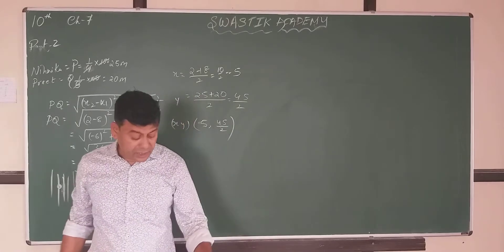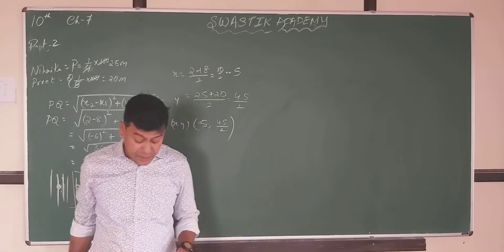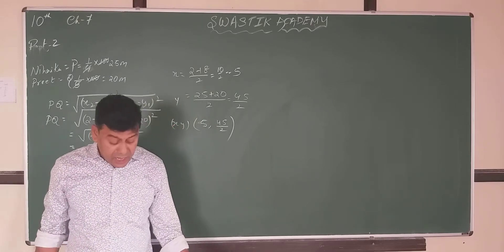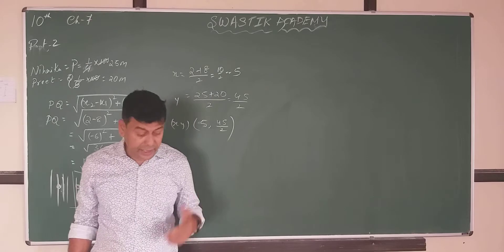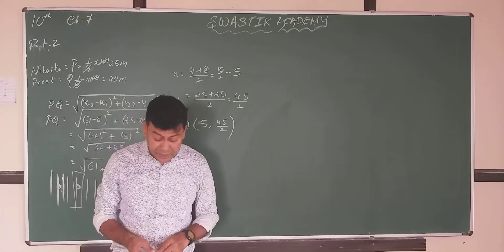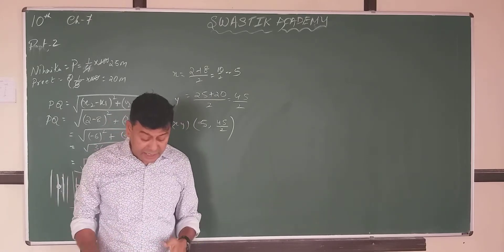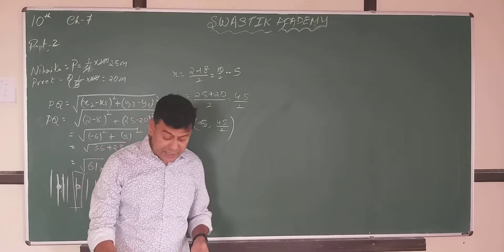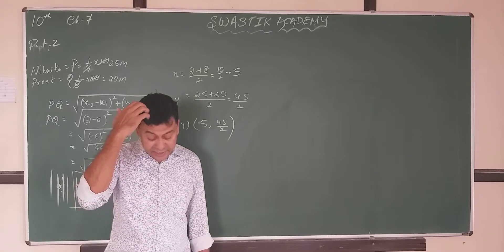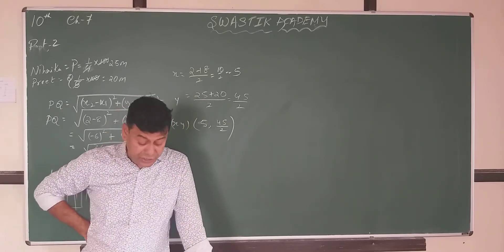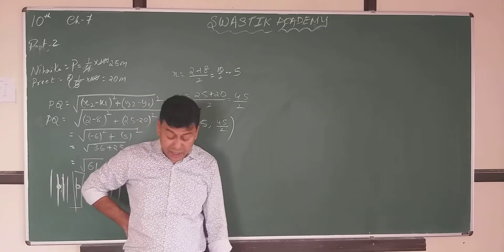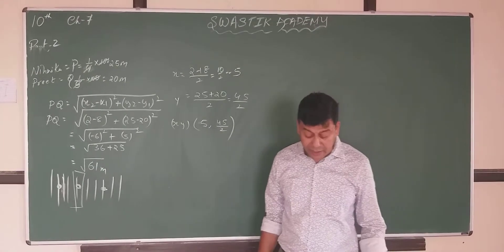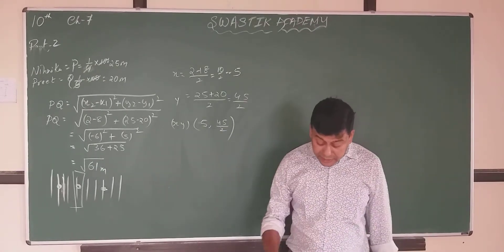This is question number 3. Now let us move ahead to question number 4. This is a somewhat different sum. Find the ratio in which the line segment joining the points (3, −10) and (6, −8) is divided by the point (−1, 6).